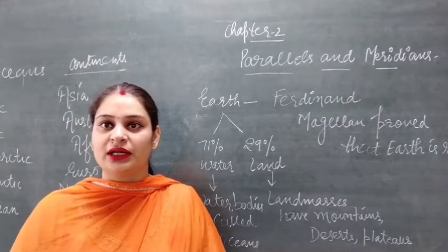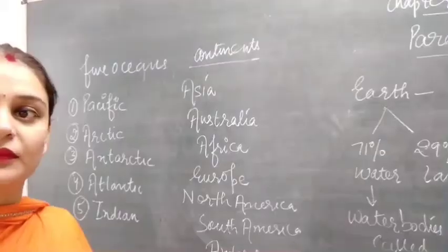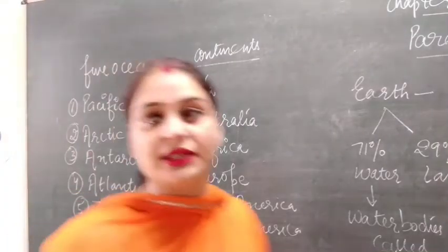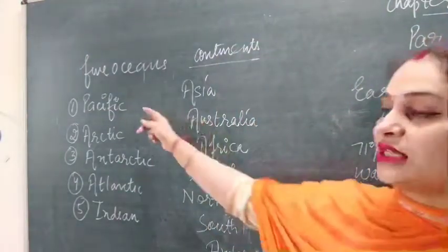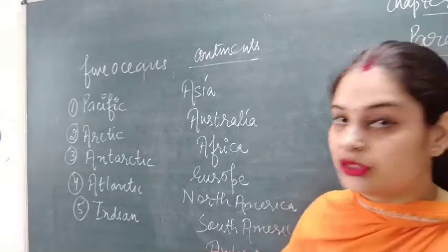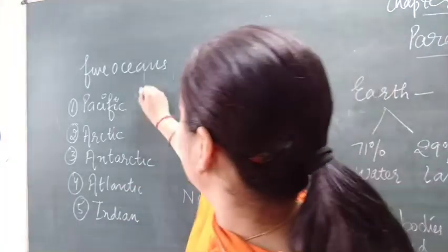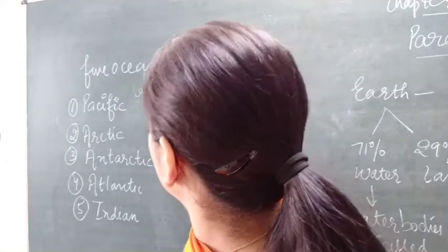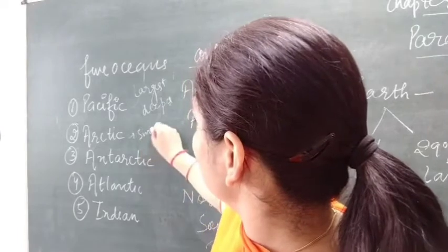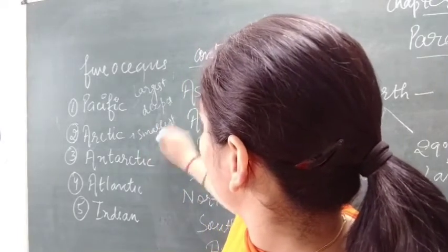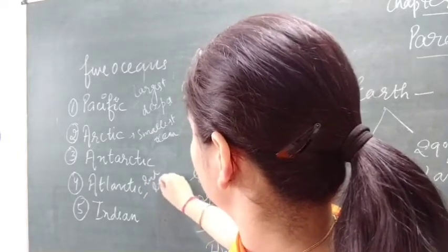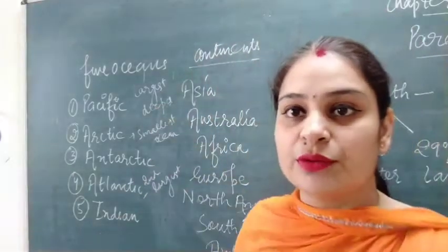That is why another name for our earth is the Blue Planet. There are five oceans: Pacific, Arctic, Antarctic, Atlantic, and Indian Ocean. The Pacific Ocean is one of the largest and deepest oceans. The Arctic is the smallest ocean, and the second largest ocean is the Atlantic.